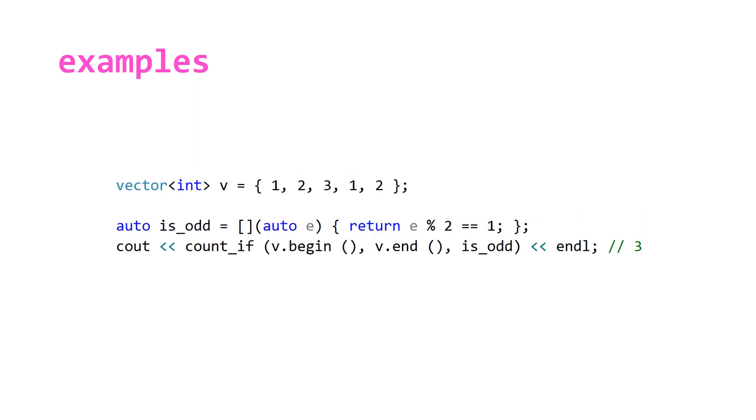count_if is slightly more exciting. We have the same vector of integers but instead of passing in a value we can pass in a lambda expression. Here we have a simple lambda is_odd that returns true if when you take the modulus of your element by 2 it returns a remainder of 1. If we do this on our vector of integers we will get 3 because we have 1, 3, and 1 which are three numbers that are odd.